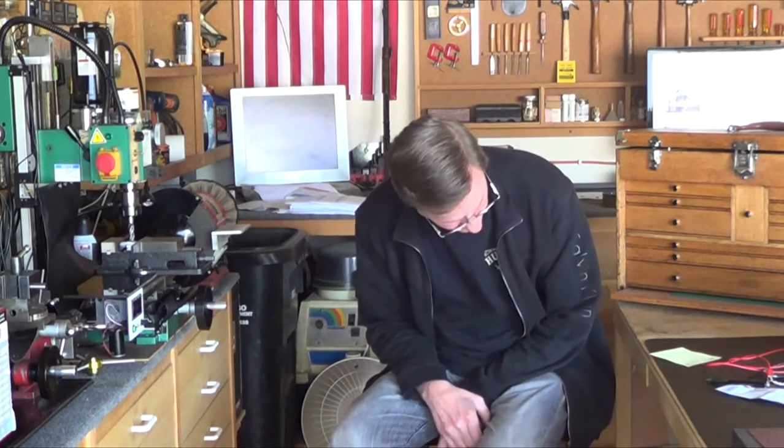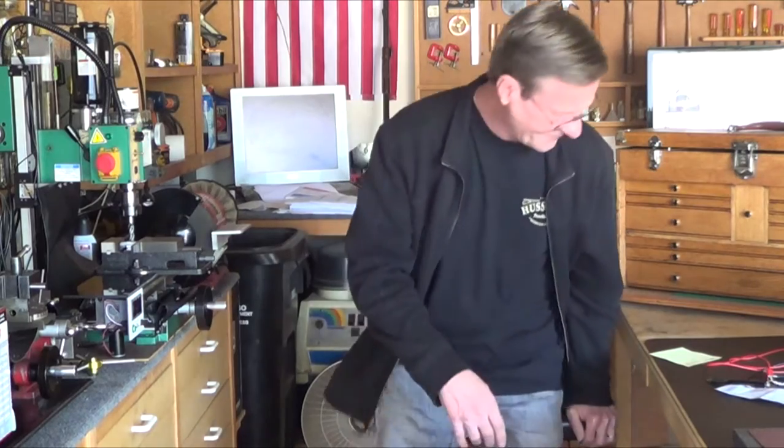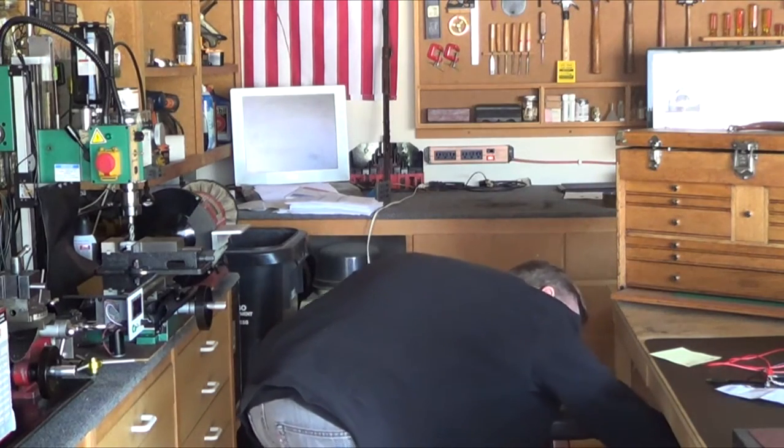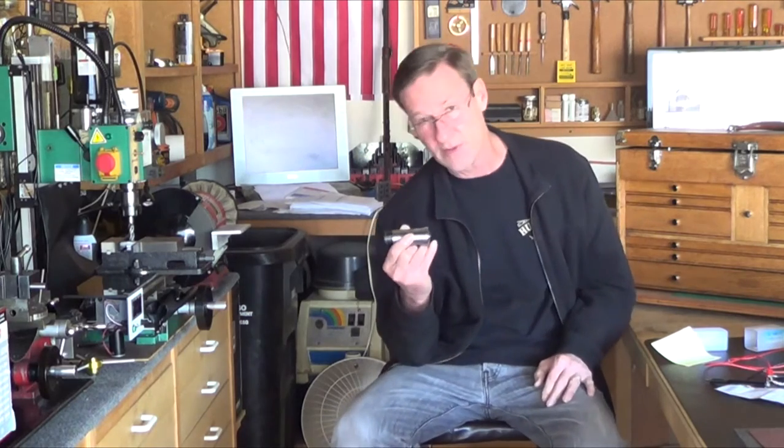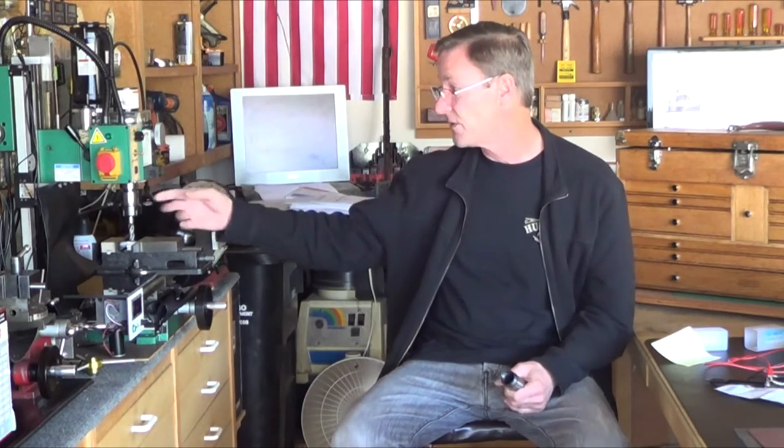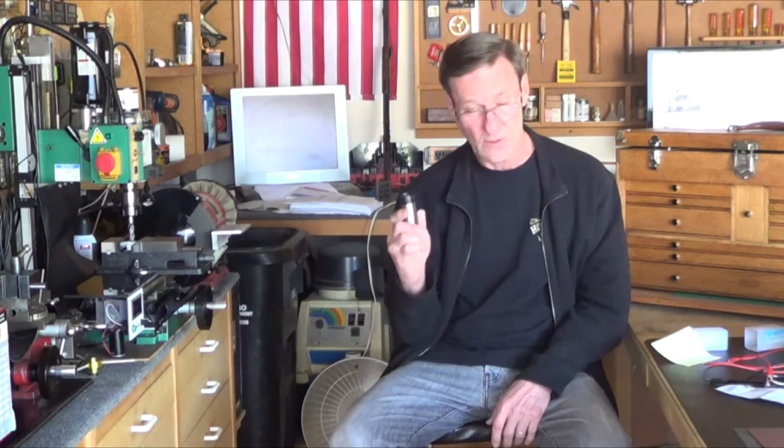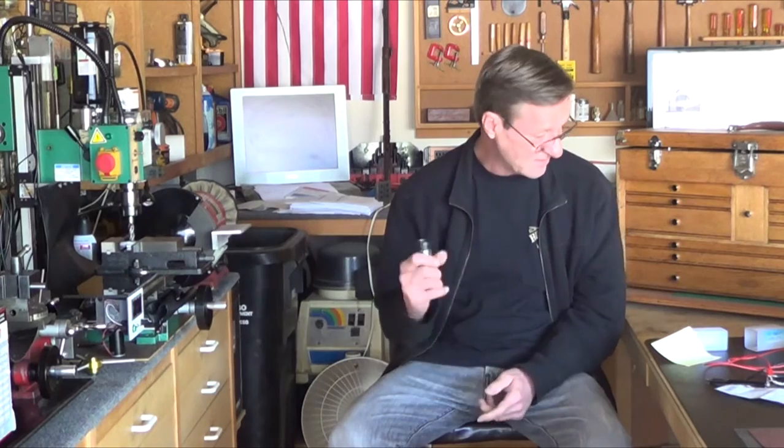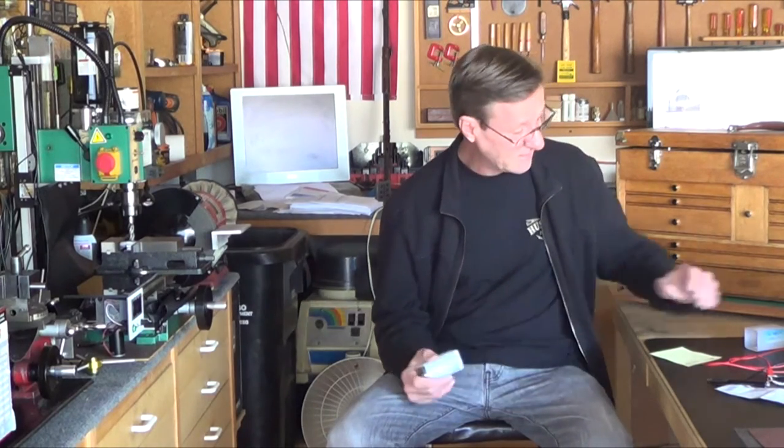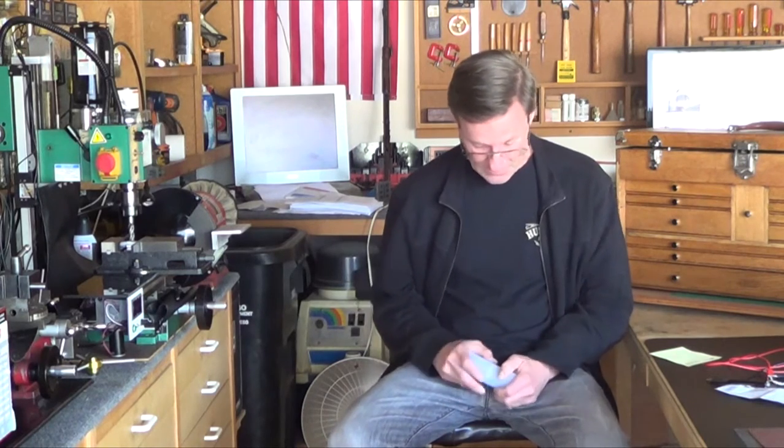The other thing is I discovered with my 5C collet - playing with the spindex - that if you let the drawbar bring it in, because this angle is really kind of steep, it'll capture it crooked if you're just using the drawbar. Don't let the drawbar do the seating on your collets. Always rotate it and snug it up, then hold it in there before you use the drawbar. I was surprised on how many thousands I got by just letting the drawbar do it, so that's just a heads up on that.